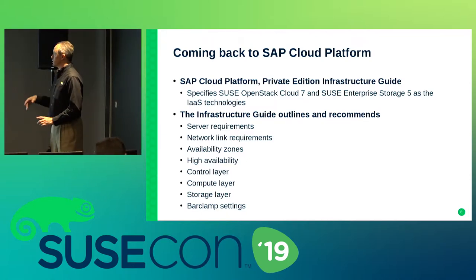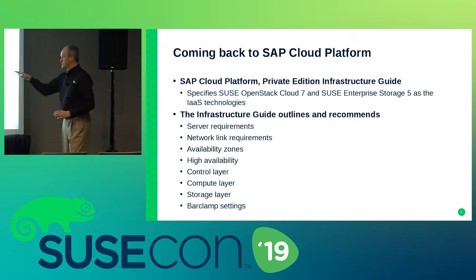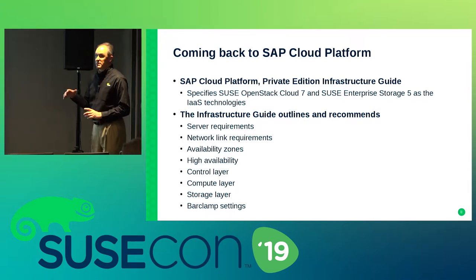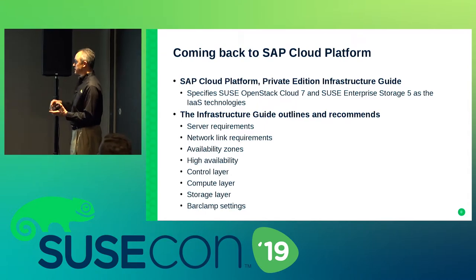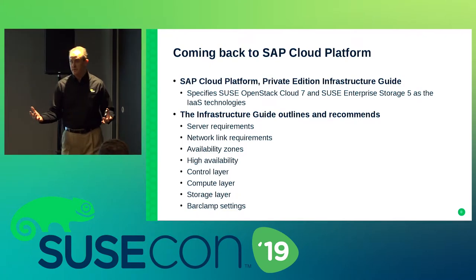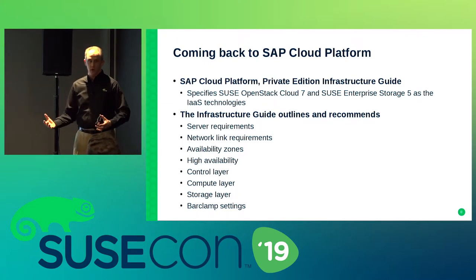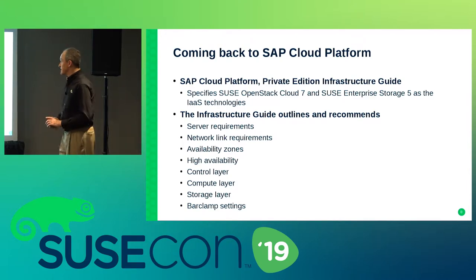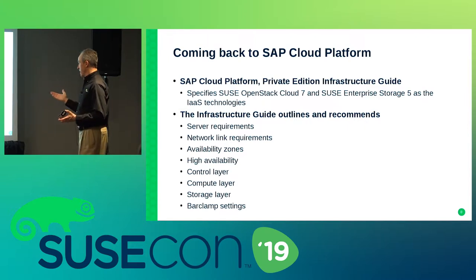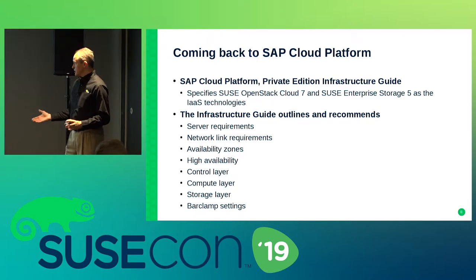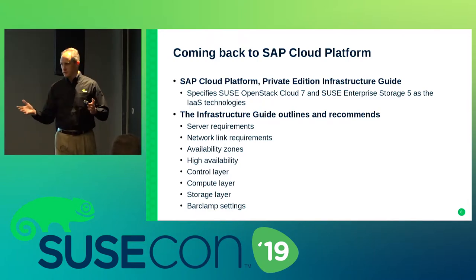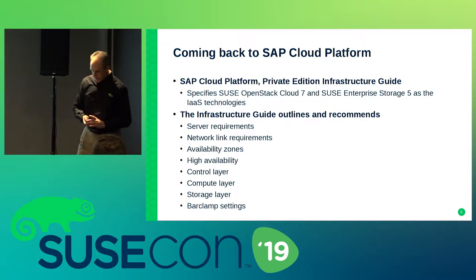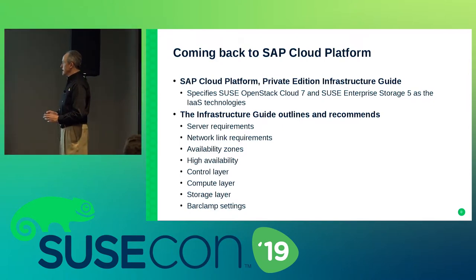It all sounded great. The SAP Cloud Platform Private Edition infrastructure guide specifically calls out SUSE OpenStack Cloud 7 and SUSE Enterprise Storage 5. Within that guide it outlines server requirements, network link requirements, availability — making things highly available using OpenStack availability zones — and recommendations for the OpenStack control layer, compute layer, storage layer, and specific configuration options for the OpenStack bar clamps in the SUSE admin server. It's quite a large document.